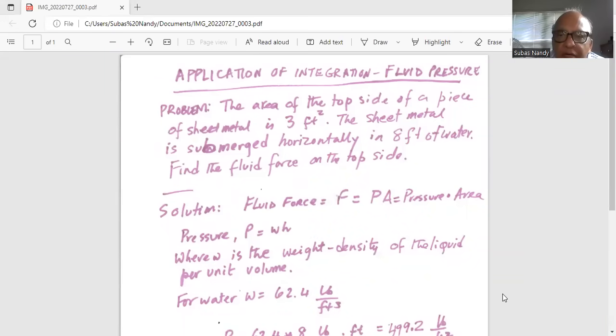The area of the top side of a piece of sheet metal is three feet square. The sheet metal is submerged horizontally in eight feet of water. Find the fluid force on the top side.